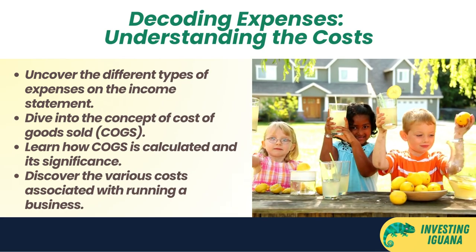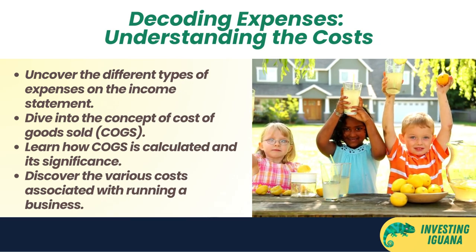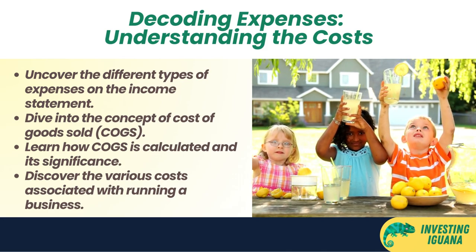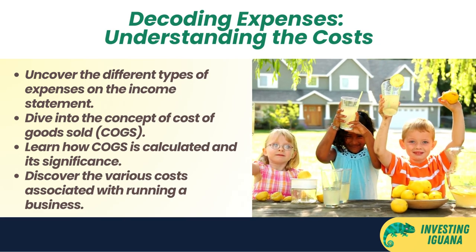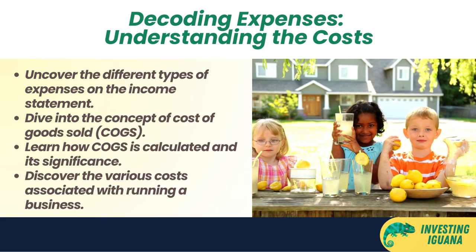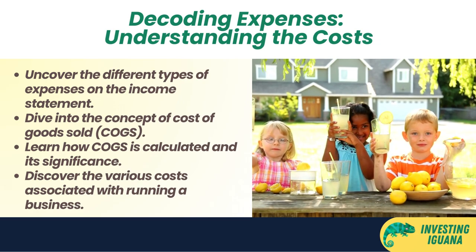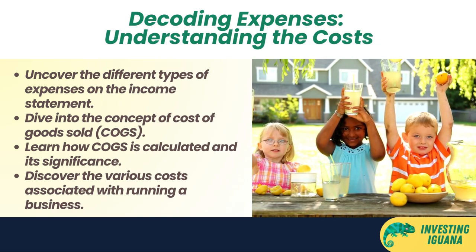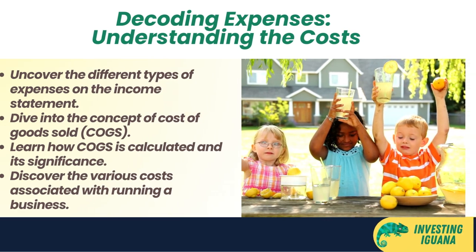Expenses are the costs that a company incurs to generate revenue. They include things like cost of goods sold, operating expenses, interest expenses, and taxes. Cost of goods sold (COGS) is the direct cost of producing or acquiring the products or services that a company sells — things like raw materials, labor, and overhead. For the lemonade stand, costs like lemons, sugar, water, cups, and ice, plus your wage, add up to 50 cents per cup, so COGS for 100 cups would be 50 dollars.